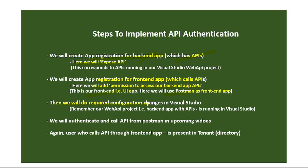We will make the required configuration changes in Visual Studio — adding tenant ID, client ID, and scope. Finally, we will authenticate and call APIs from Postman in upcoming videos. For this video, we will just implement the API authentication; calling the authenticated API will be done in upcoming videos.